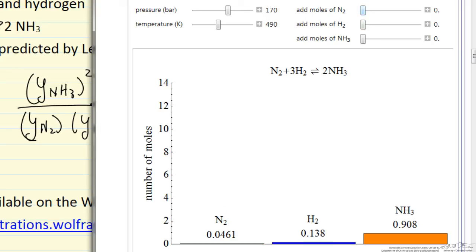So you can see I add nitrogen, the number of moles of hydrogen have decreased, the number of moles of ammonia increased. Let's add more nitrogen.